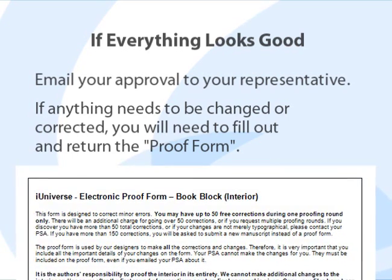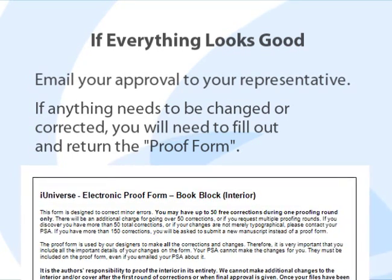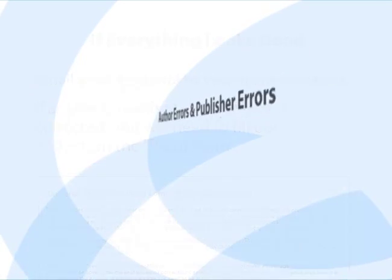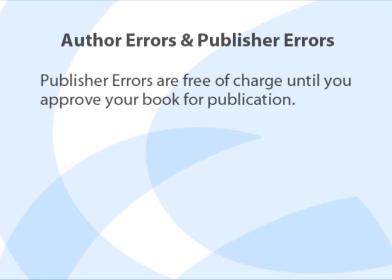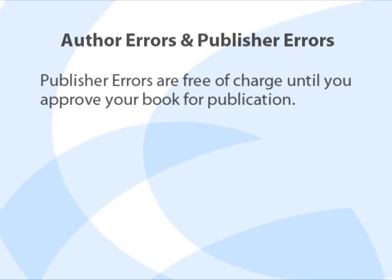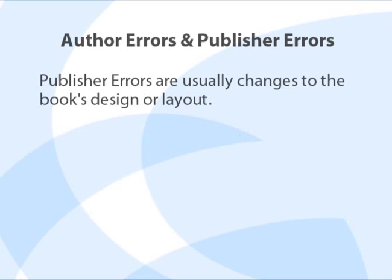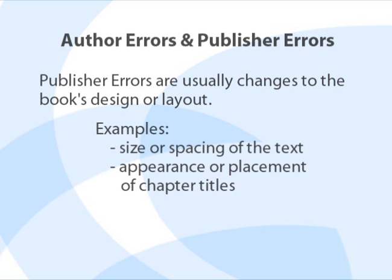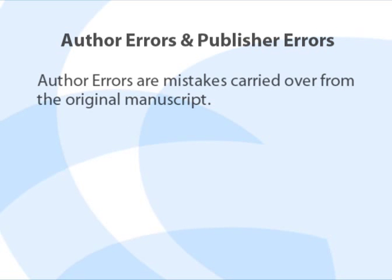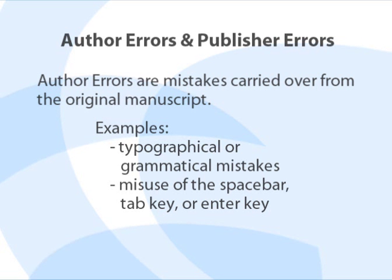I'll show you how to fill out the proof form in just a moment, but first I want to discuss the two kinds of errors and when corrections fees may apply. There are two kinds of errors: author errors and publisher errors. Before you have approved your interior for publication, there is never a charge for publisher errors, but author errors are not always free of charge. Publisher errors are generally design or formatting changes where your book designer has made a stylistic decision you just don't agree with, such as the size or spacing of the text, or the appearance or placement of chapter titles. Author errors are errors carried over from the original manuscript. They are most often typographical or grammatical mistakes, but can also include misuse of the spacebar, tab, or enter keys.